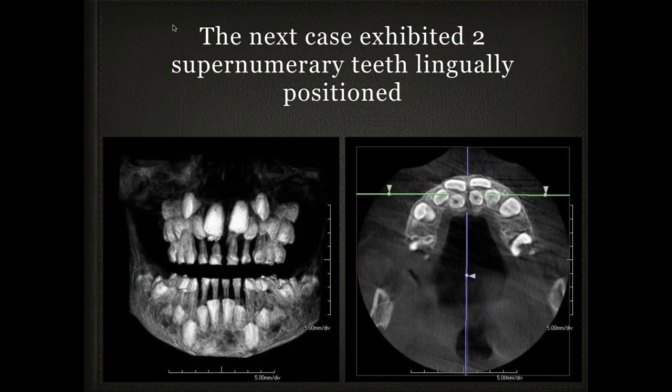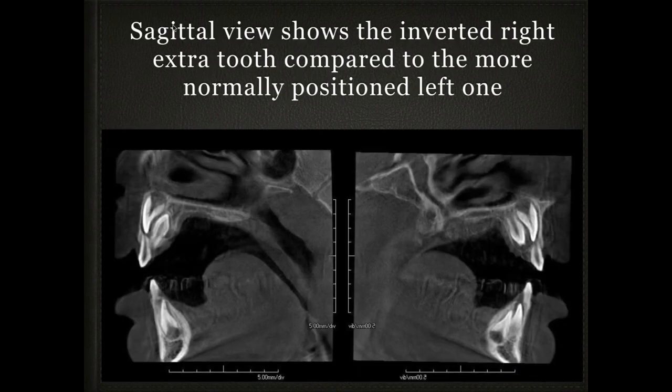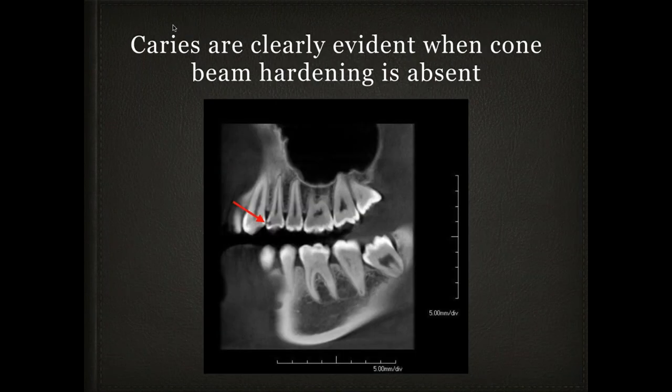Here's another child referred from a pedodontist to an oral surgeon for extraction of two supernumerary teeth who ended up in my office instead. We took a cone beam on the child. The picture on the left shows the supernumerary tooth — the mesiodens — actually apically positioned, with the crown pointed apically. The tooth next to it is pointed 180 degrees different, coronally. Knowing the position of those teeth, we were able to map out a surgical strategy for removing them without damaging the permanent tooth or surrounding structures.